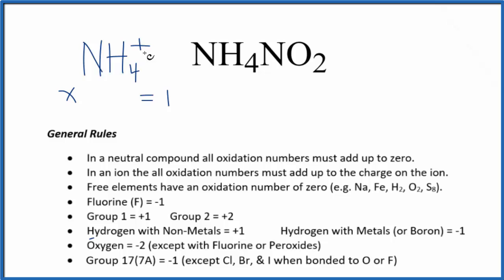So we have X plus one times four, since we have four hydrogens. So X plus four equals one. Add negative four to both sides, X equals minus three. So for this nitrogen here in NH4 plus, in the ammonium ion, we have minus three as our oxidation number.